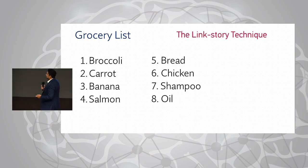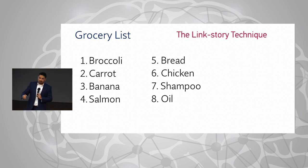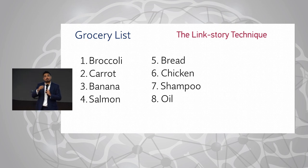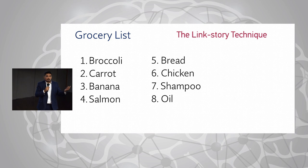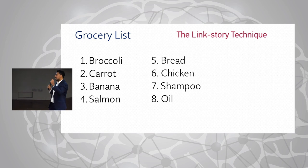Next, take a piece of carrot and stick it on top of the broccoli — visualize the carrot protruding out of the broccoli. Then take a banana and put it on top of the carrot, so you visualize the banana balancing on the carrot.